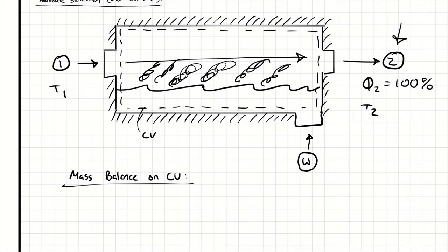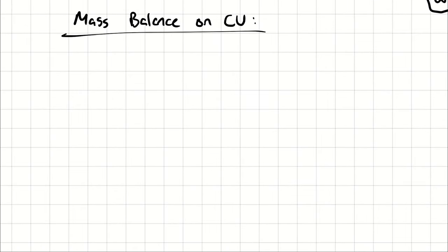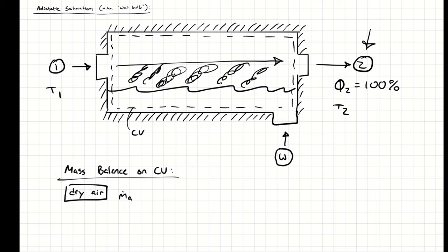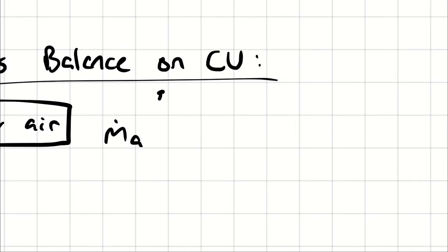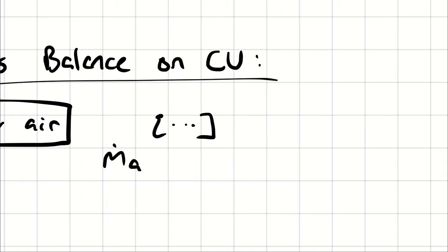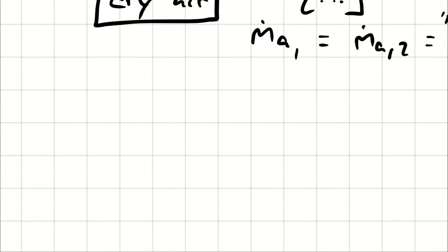When performing our mass balance, we could set up a balance on just the dry air, on the water vapor, or on the atmospheric air itself. Generally, doing the mass balance on the individual species is more convenient. Looking at the mass balance on the dry air, there are two opportunities for air to cross the boundary: dry air entering at state 1 and dry air exiting at state 2. Because we have steady-state operation of an open system with one inlet and one outlet, ṁ_a1 equals ṁ_a2, which I'll abbreviate as ṁ_a.